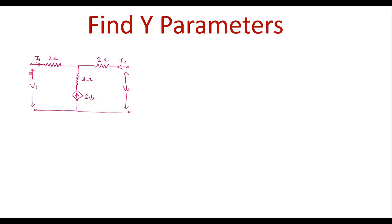At the input port, the voltage is V1, and this is the output port, voltage is V2. Here we can find that there is a node. We will consider the voltage at this node as V.